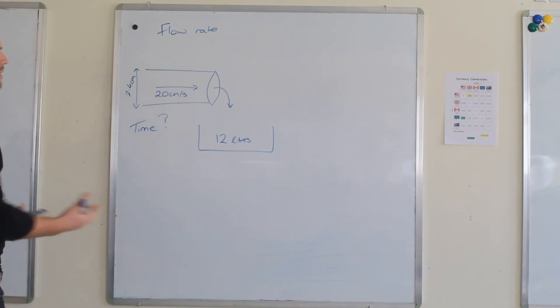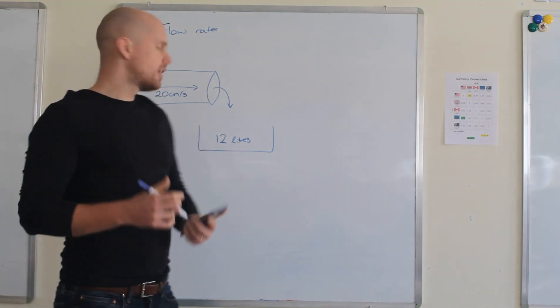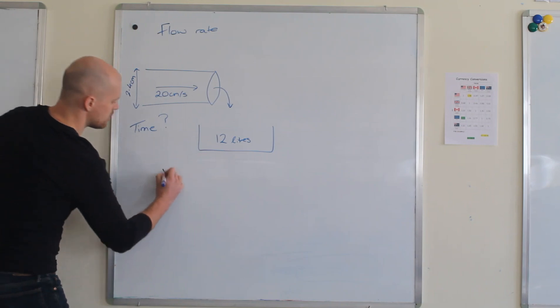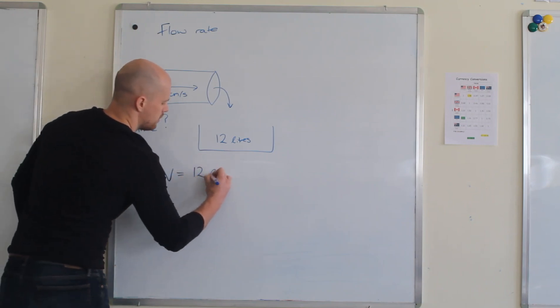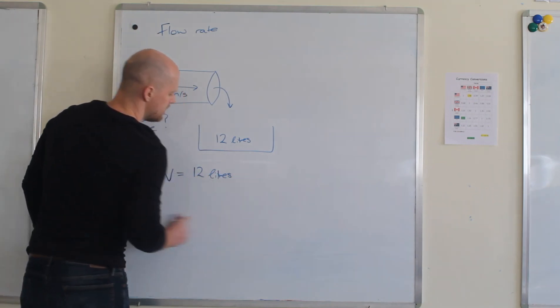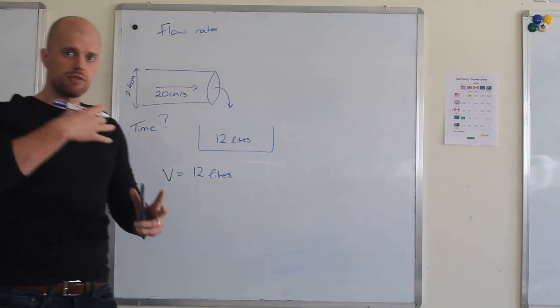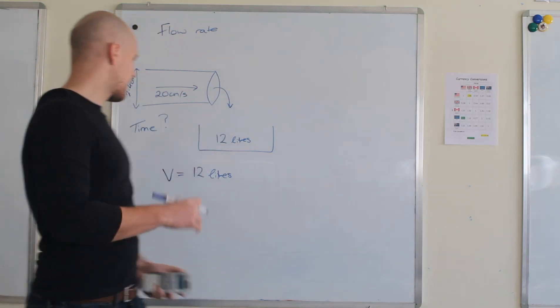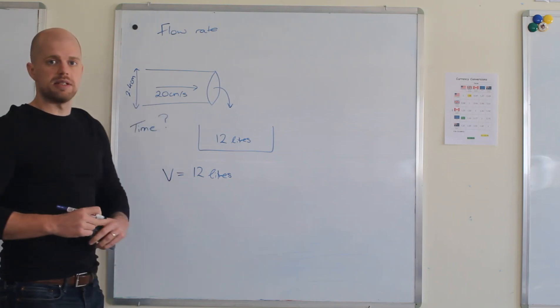So what you need to do first of all is calculate the volume. And the volume is 12 liters. And what you need to remember is the conversion from liters into meters cubed and into centimeters cubed.